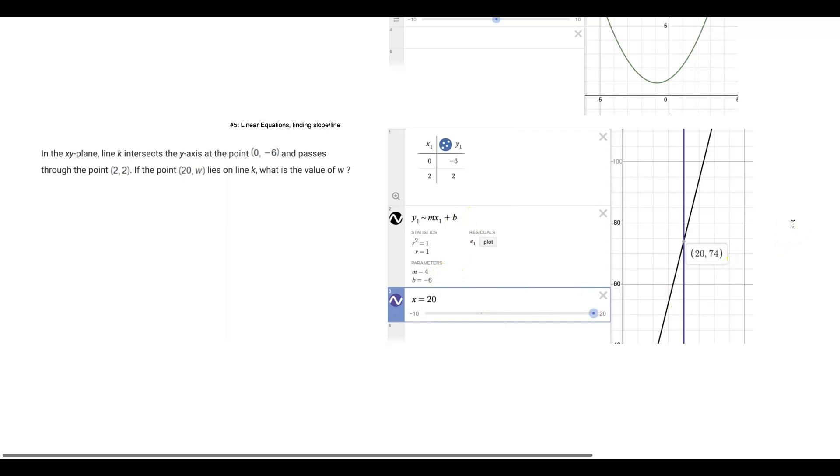You could take that and just find the answer, or because it plots the line literally on the right side, we just set a slider for x equals 20 to find where they intersect. You see here, when x is 20, y is 74. So if the point (20, w) lies on line k, which is the black one, then the value of w would be 74.